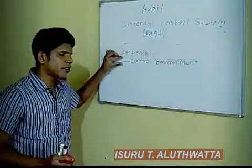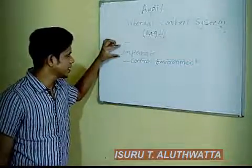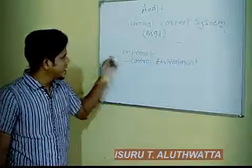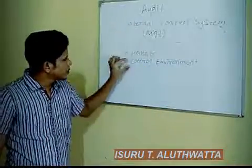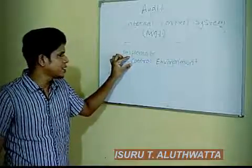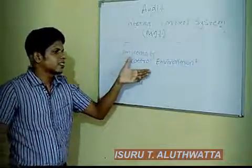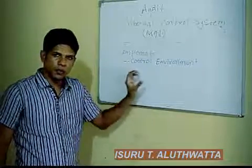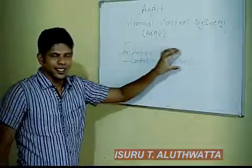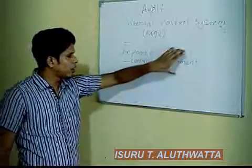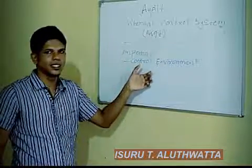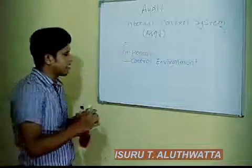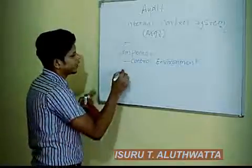Number one is the control environment. What is the control environment? This is a very important component of the internal control system. Control environment refers to the individuals included — management is included here. The one who is designing the internal control system is management, so you should make sure these are honest and integrity-driven individuals. When honest and integrity-driven individuals design the internal control system, the system is more effective.